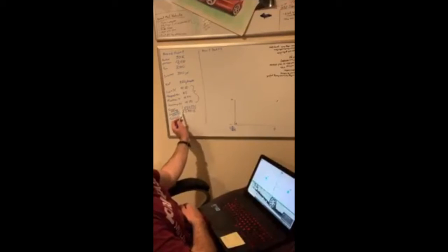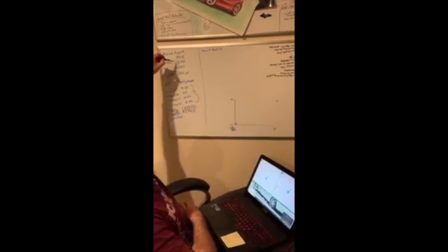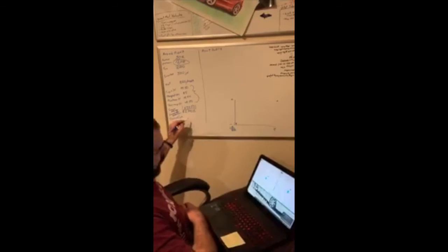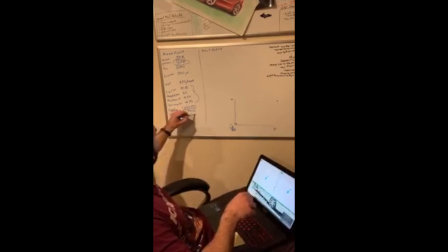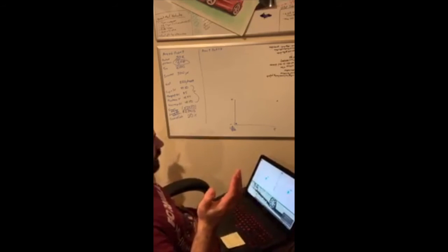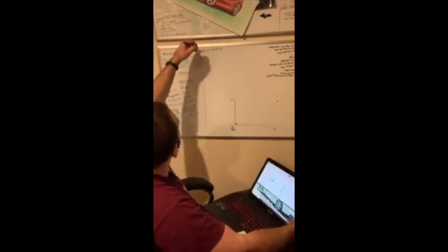If you do your cash on cash return, you take this $209 and divide it by the actual cash you've put into this house. Your cash on cash return for this place would be like 20% and some change. That's a pretty good cash on cash return.